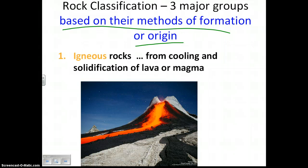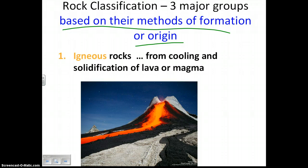First, rock classification. There are three major groups of rocks, and they are igneous, sedimentary, and metamorphic. Today we are learning about the first one, and they're based on their methods of formation or origin — meaning where the rocks came from, how they formed. That's how we decide how to classify them: where they form deep underground, where they form on the surface of the ground. The special thing about igneous rocks is that they're formed from cooling and solidification of lava or magma.